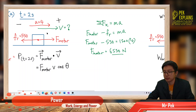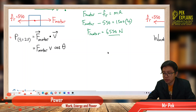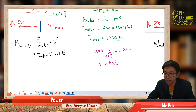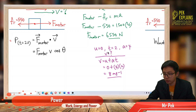Now we find velocity at 2 seconds. Initial velocity is 0, acceleration is 4, time taken is 2 seconds. Using the kinematic formula: v equals u plus at. So v equals 0 plus 4 times 2. We get 8 meters per second. That is the velocity at 2 seconds.